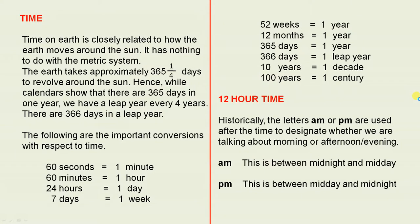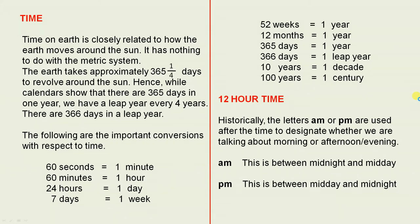Time on Earth is closely related to how the Earth moves around the Sun — it has nothing to do with the metric system. The Earth takes approximately 365 and a quarter days to revolve around the Sun. Hence, while calendars show that there are 365 days in one year, we have a leap year every four years. There are 366 days in a leap year.